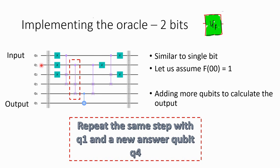After that, we repeat the same step with q1 and the new answer qubit q4. We repeat the same thing that we did for one bit — for the second bit, q1 does a CSWAP or AND with q3 and stores the value in q4.